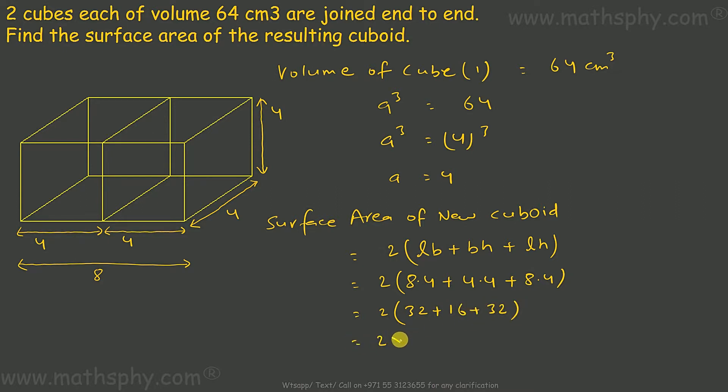This comes out to be 2 into 32 plus 16 plus 32 which gives you 80, which is 160 cm². So the surface area of this cuboid by joining 2 cubes is 160 cm².